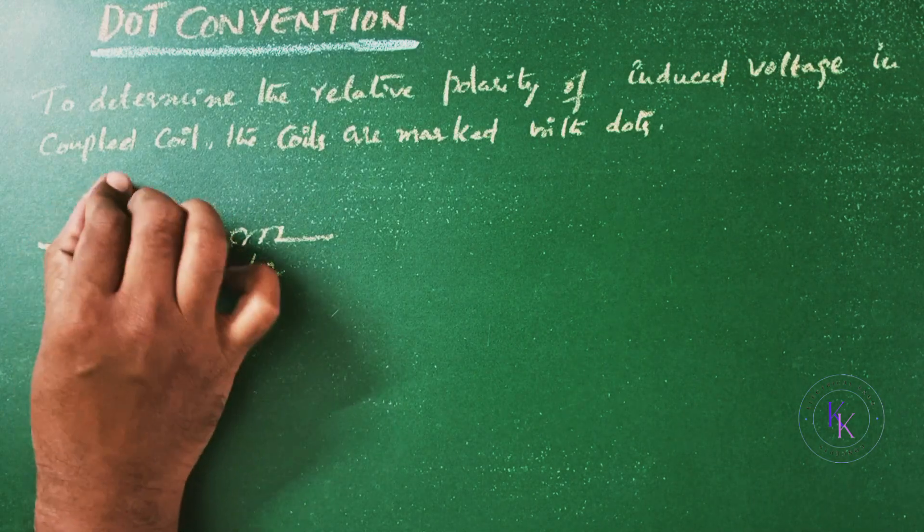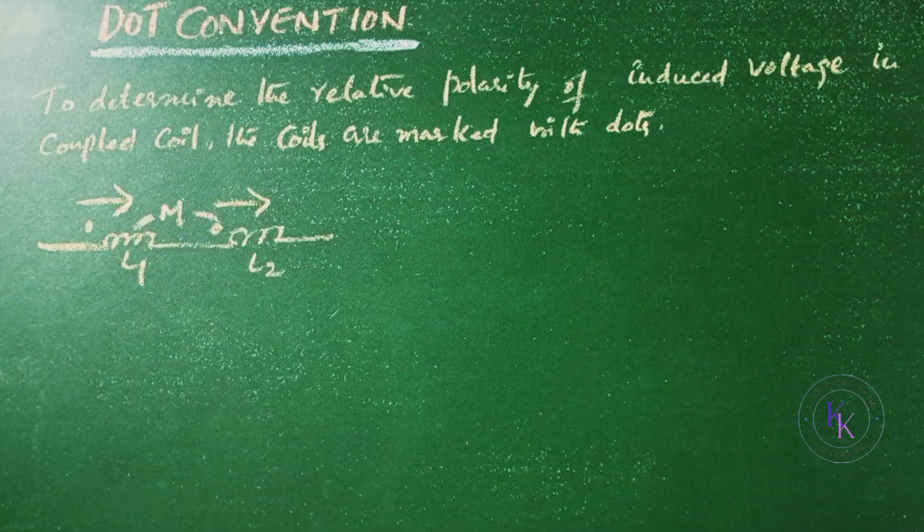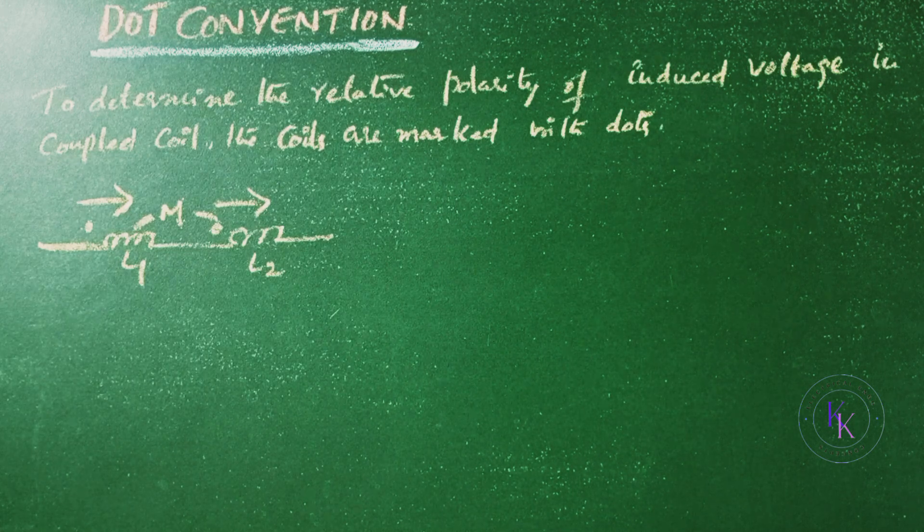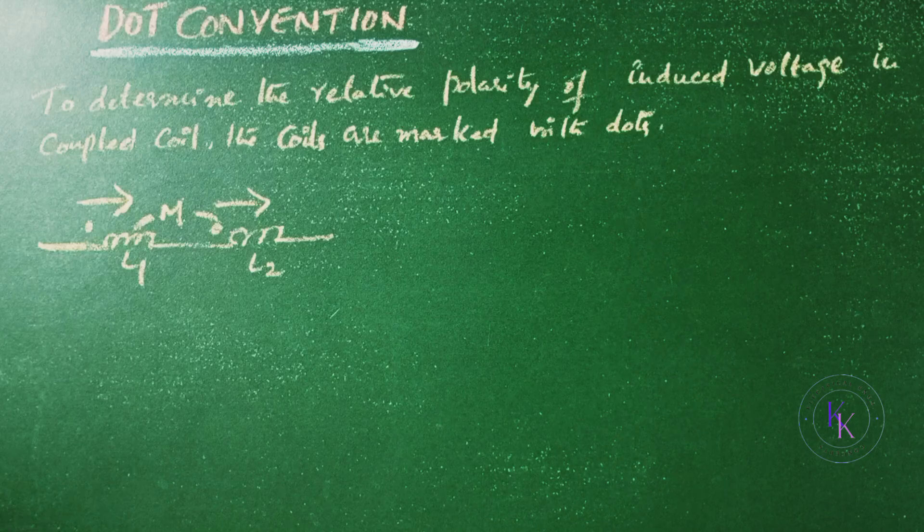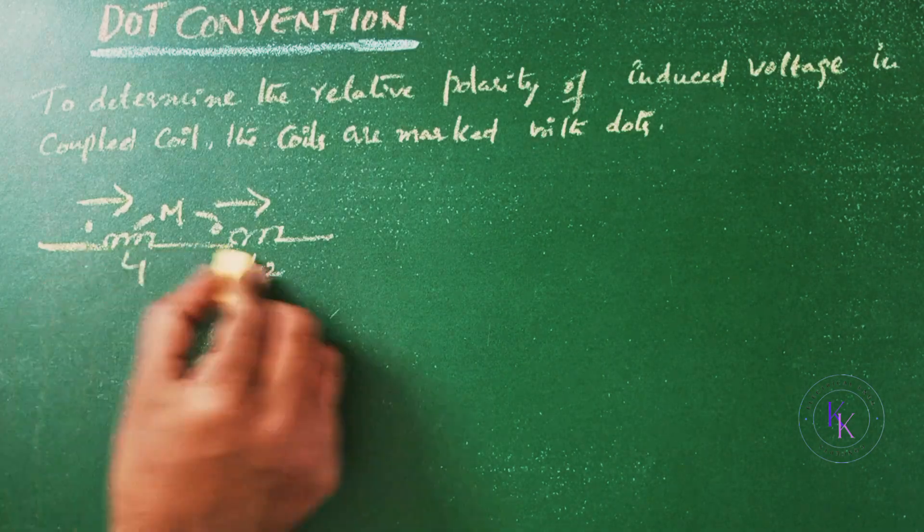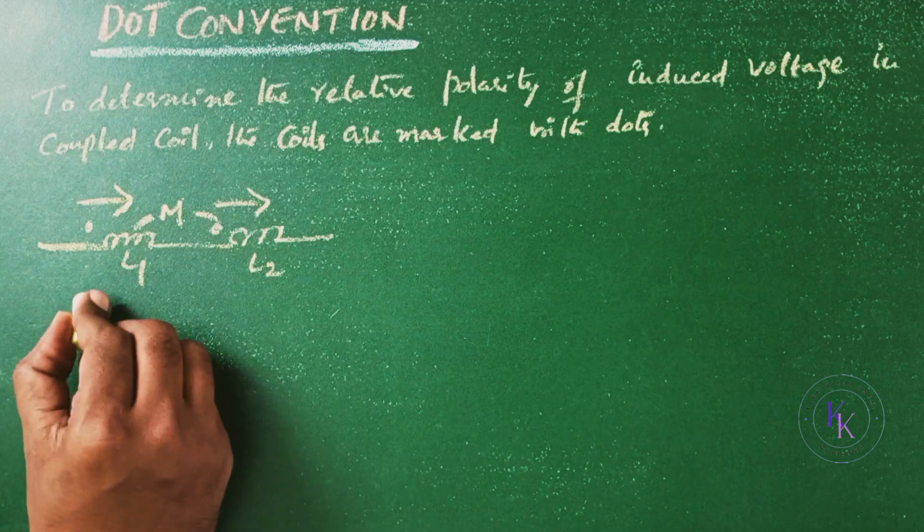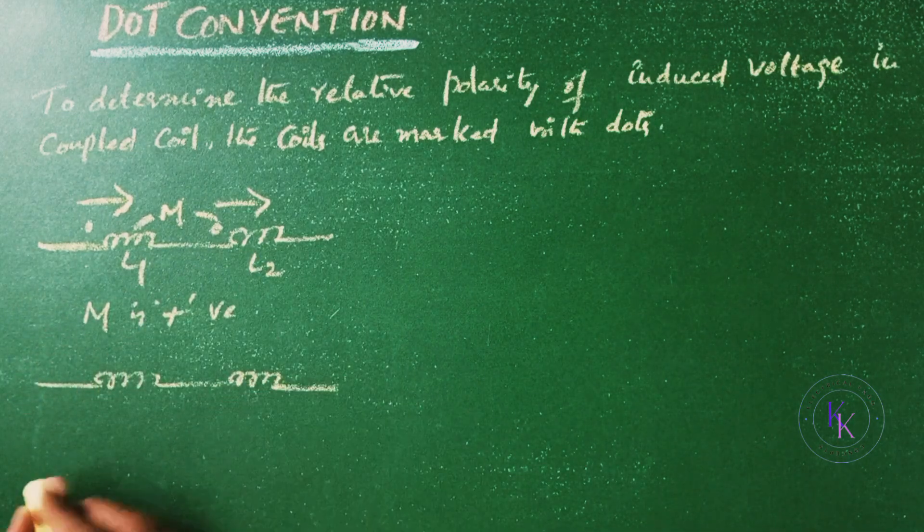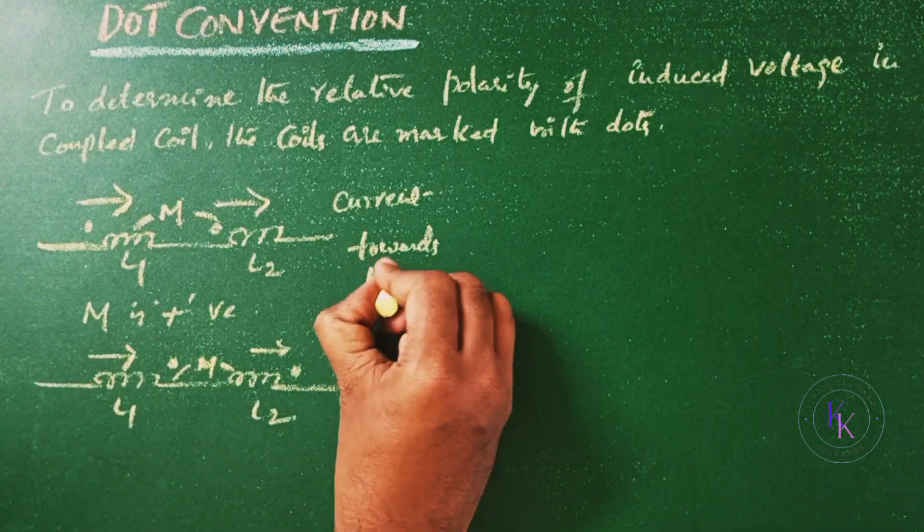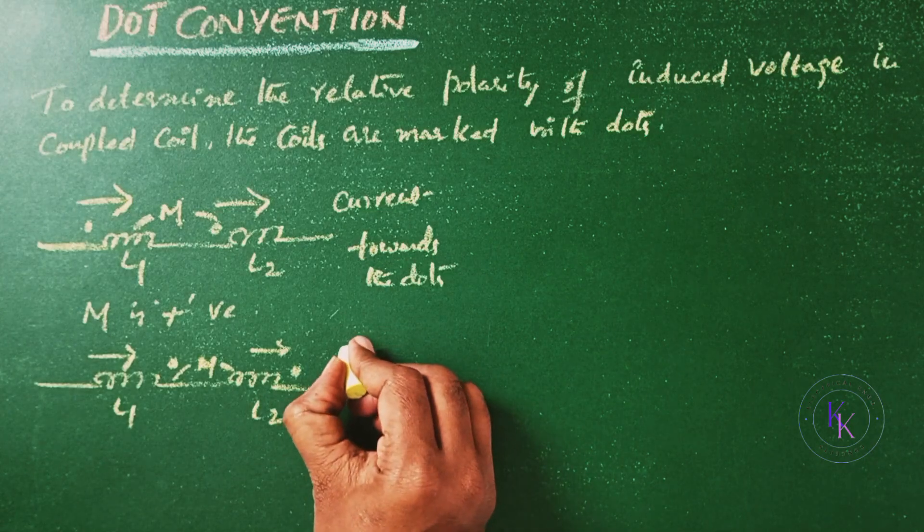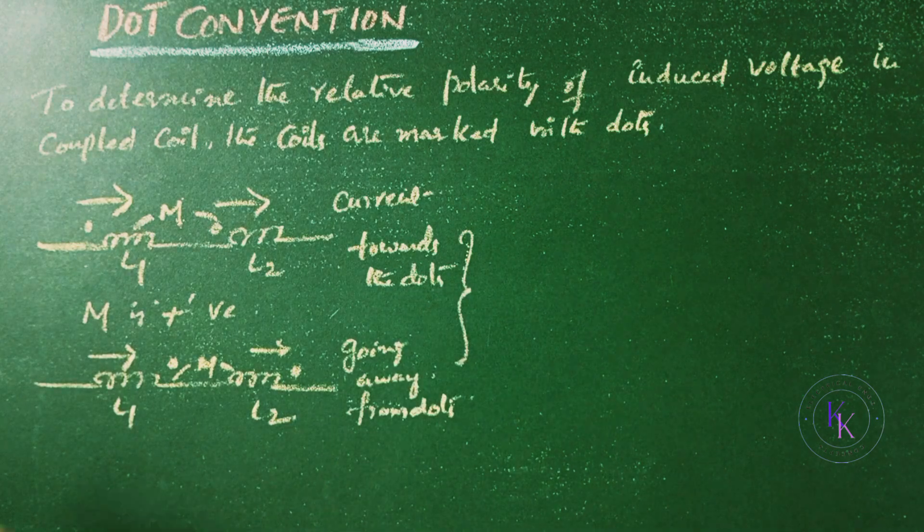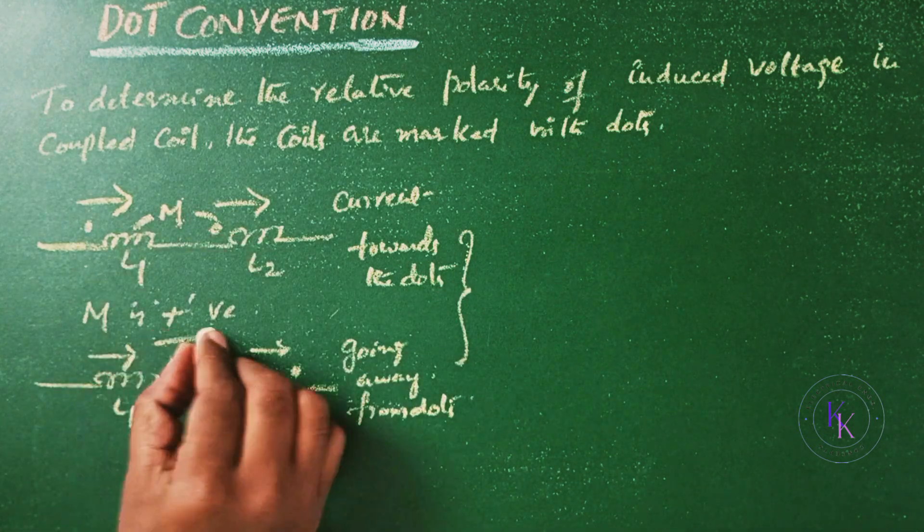Current flows. When the currents through each of the mutually coupled coils are going away from the dot or towards the dot, here you can see the currents are going towards the dot. In each case the mutual inductance M is positive. Towards the dot here, going away from the dots. In both these cases the mutual inductance M is taken as positive.